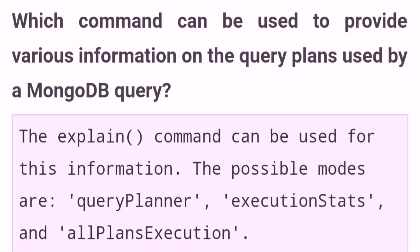Which command can be used to provide various information on the query plans used by a MongoDB query? The explain command can be used for this information. The possible modes are query planner, execution stats, and all plans execution.